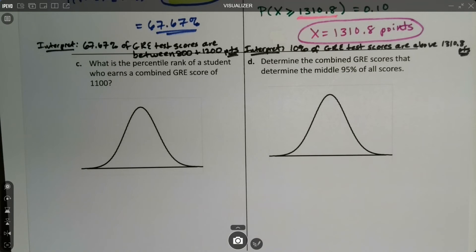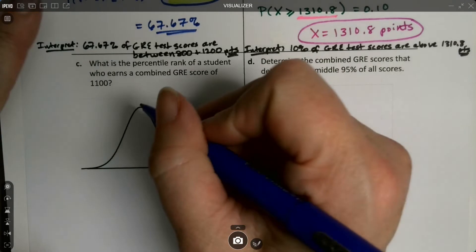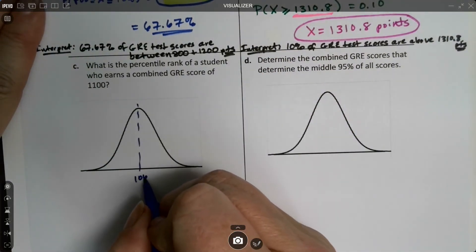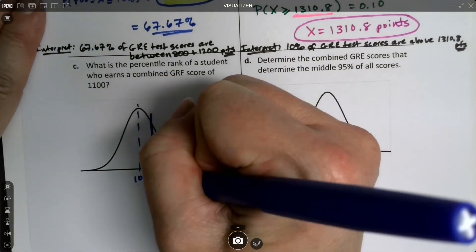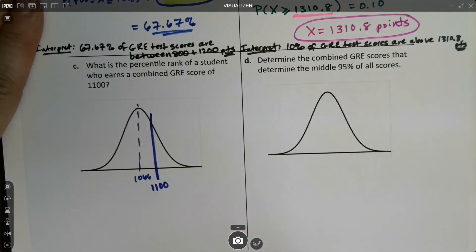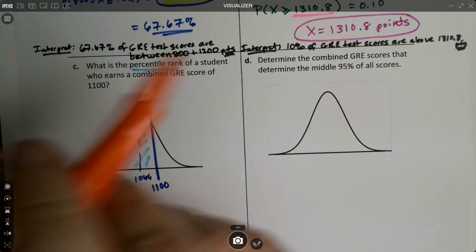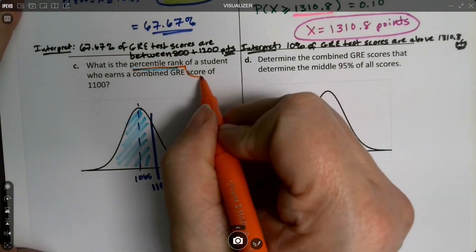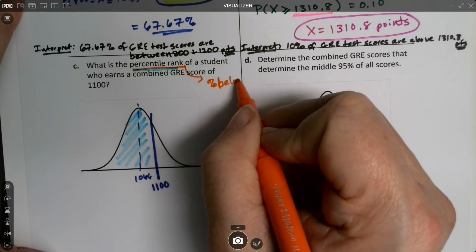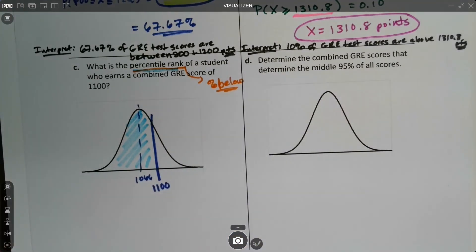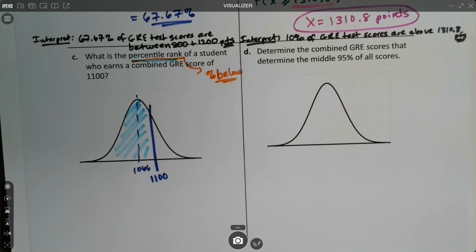Next, what is the percentile rank of a student who earns a combined GRE score of 1100? Okay, so you know the score is 1100. I know that the middle is 1066 right here. And I know 1100 is going to be real close, right there. There's 1100. Percentile rank is the percentage below. We learned that before. That's the third time we've seen it in this section. So that's why I'm shading to the left.